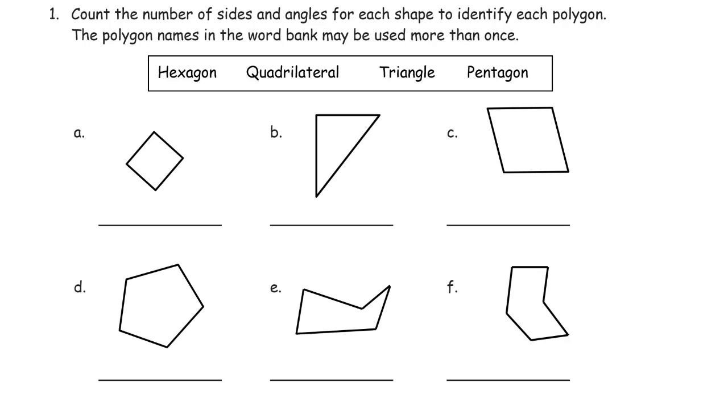So, I'm just going to write this down as a key. It will help you out. If you have trouble remembering these, and you might, hexagons have 6 sides and angles, quadrilaterals have 4, triangles have 3, and pentagons have 5.